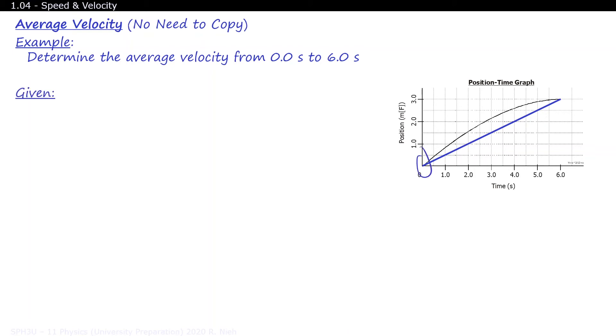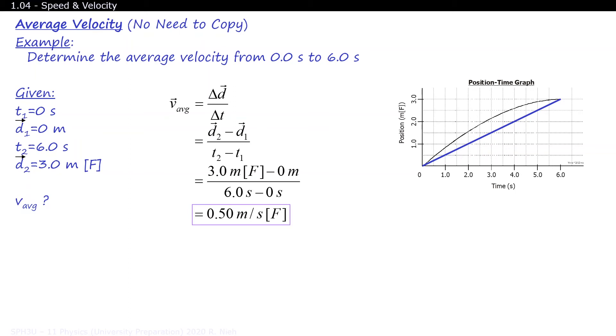At time zero, the position is at zero. At six seconds, the position is at three meters. To find average velocity, we divide displacement by time. Remember that the definition of displacement is change in position, so we'll expand the formula. Next, we sub in all the values and simplify. Our final answer is 0.50 meters per second forwards.